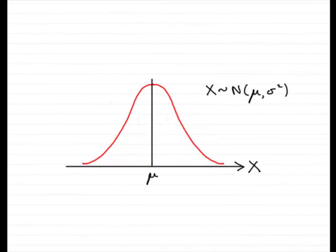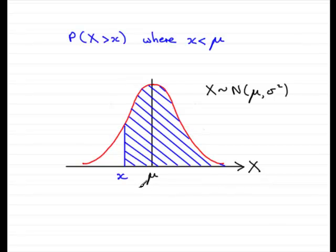Hi, welcome to this tutorial on the normal distribution. In this tutorial what I want to show you is how we work out the probability of being more than an observed value x where the observed value x is less than the mean mu. And the best way of doing this is by way of an example.